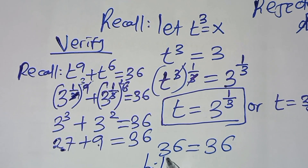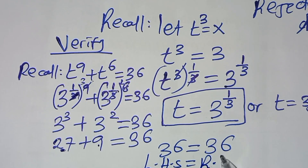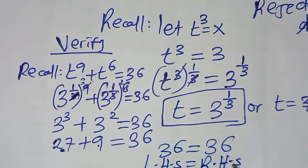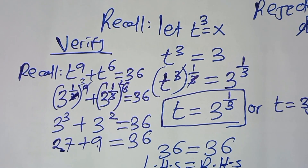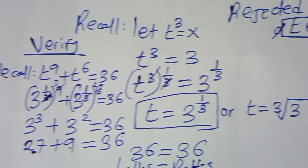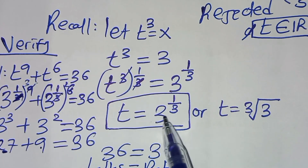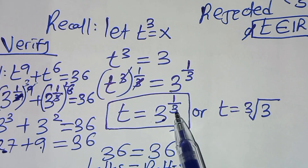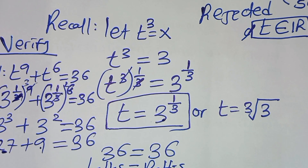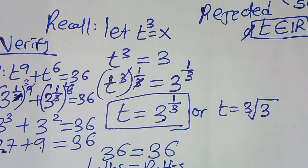The left hand side equals the right hand side. Therefore, the value of t equals 3 to the power 1 over 3, satisfies the equation. Kindly follow the steps, like this video, and subscribe. See you in the next video. Bye-bye.